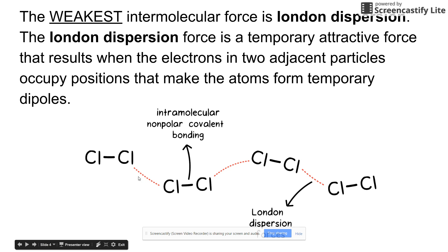At that same moment, these two electrons that make up the other bond could be found on the other side — this would be partial negative, partial positive. And then there would be a slight attraction between this partial positive and this partial negative, represented by this red dashed line.